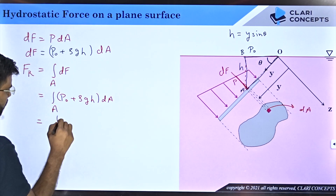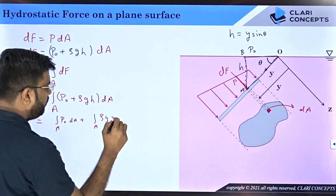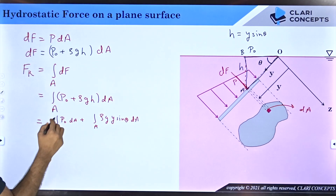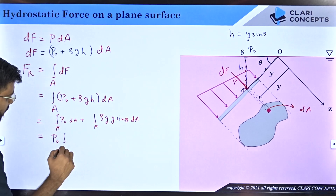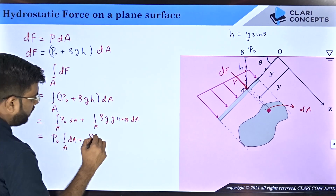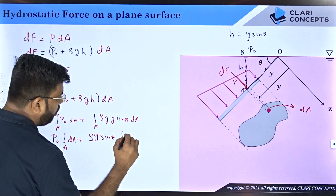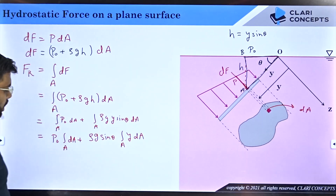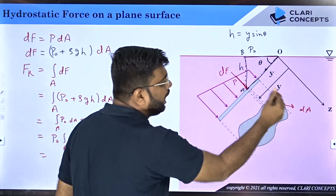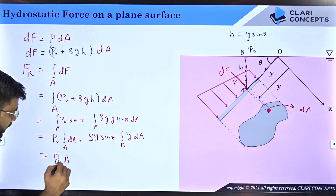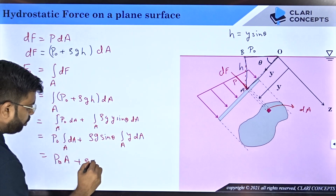Splitting the integral: FR = ∫ p₀ dA + ∫ ρg·y·sin(θ) dA. Since p₀, ρ, g, and sin(θ) do not vary with area, they come outside the integral. So FR = p₀ ∫dA + ρg·sin(θ) ∫y dA. Note that y does vary with area, so it stays inside the integral. The integral of dA over the total area gives the total area A.